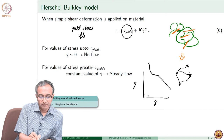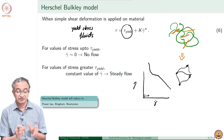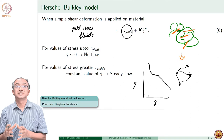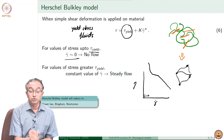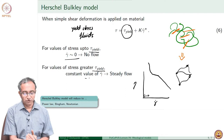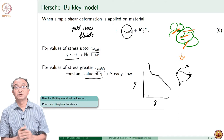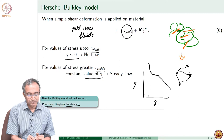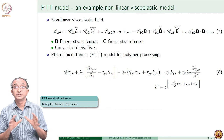In the Herschel-Bulkley model, if tau_yield is set to zero, it becomes a power law shear thinning material. So the Herschel-Bulkley model is a yield stress model combined with a shear thinning model. For values of stress up to tau_yield there is no flow, and when stress is greater than tau_yield, there is a strain rate which is reached and the material behaves like a shear thinning viscous fluid. This is an overview related to the viscous models.